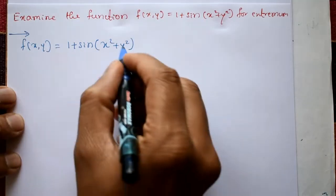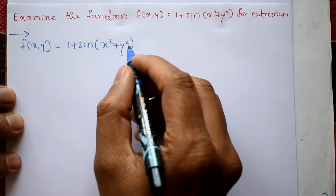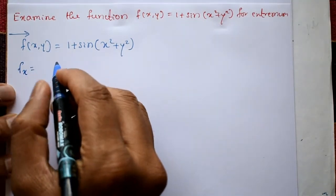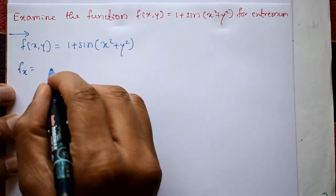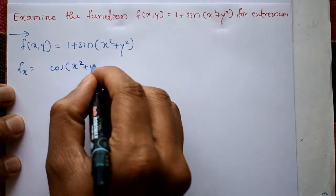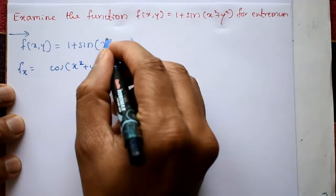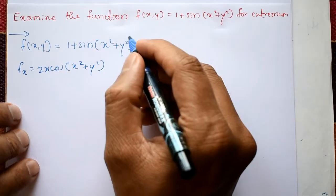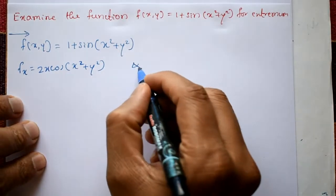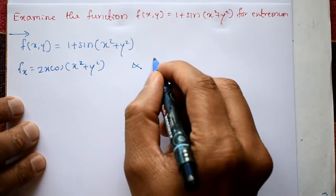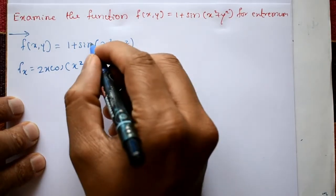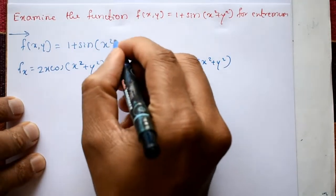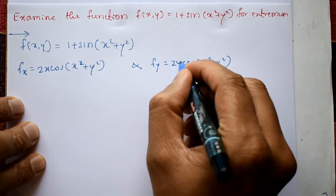Differentiate with respect to x and y partially. ∂f/∂x equals cos(x² + y²) times 2x, since differentiation of sine is cosine and x² differentiates to 2x, while y is treated as a constant. Similarly, ∂f/∂y equals cos(x² + y²) times 2y.